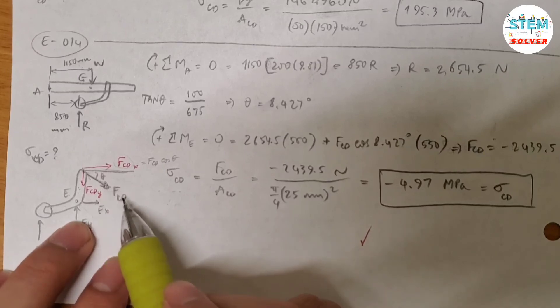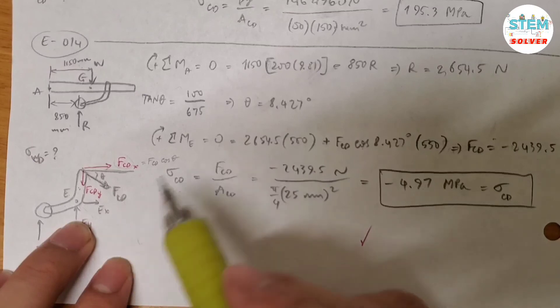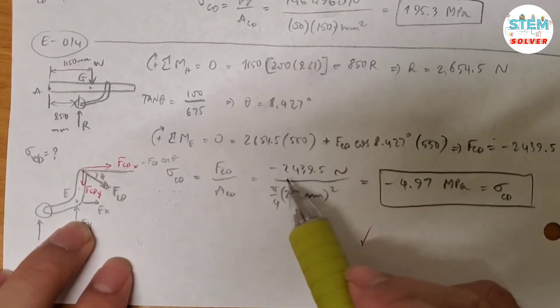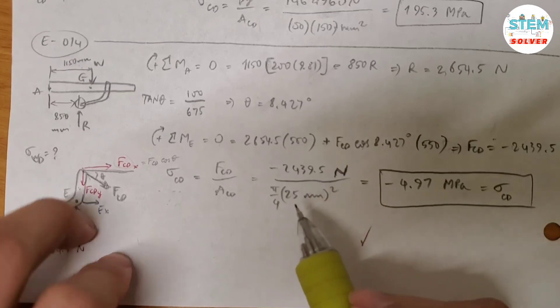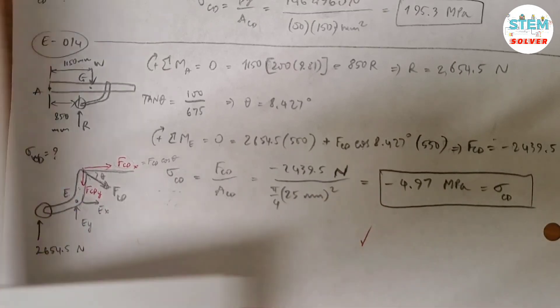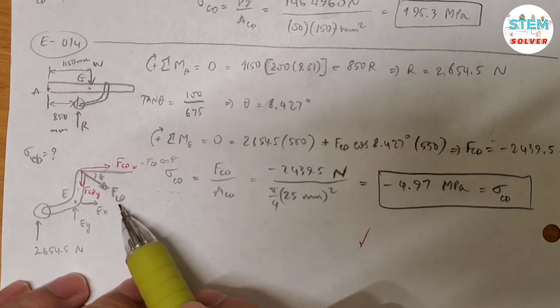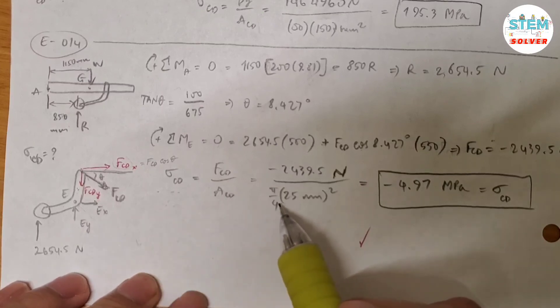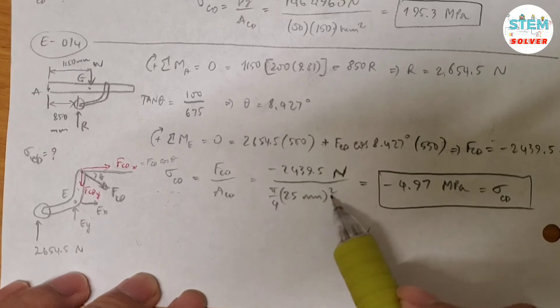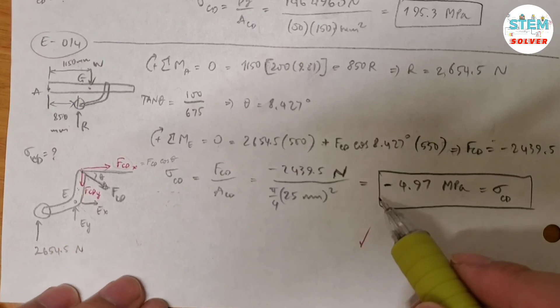Now, since we know the normal force FCD, we can find the normal stress of this one. So the normal stress of this one is equal to the normal force divided by the area. So the normal force is what we just found, 2439.5N, divided by the area. And you are given the hydraulic cylinder has a diameter of 25mm. So the area of a cylinder is equal to pi over 4 times diameter squared. Doing the calculation to the calculator and you will get negative 4.97 MPa. The negative sign means that it is in compression.